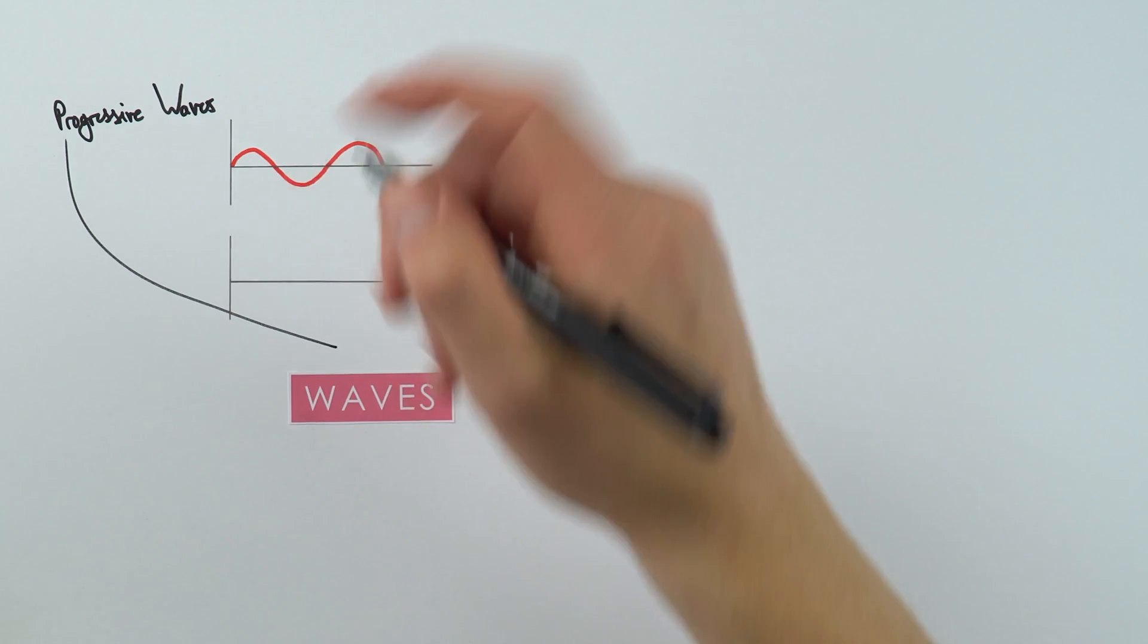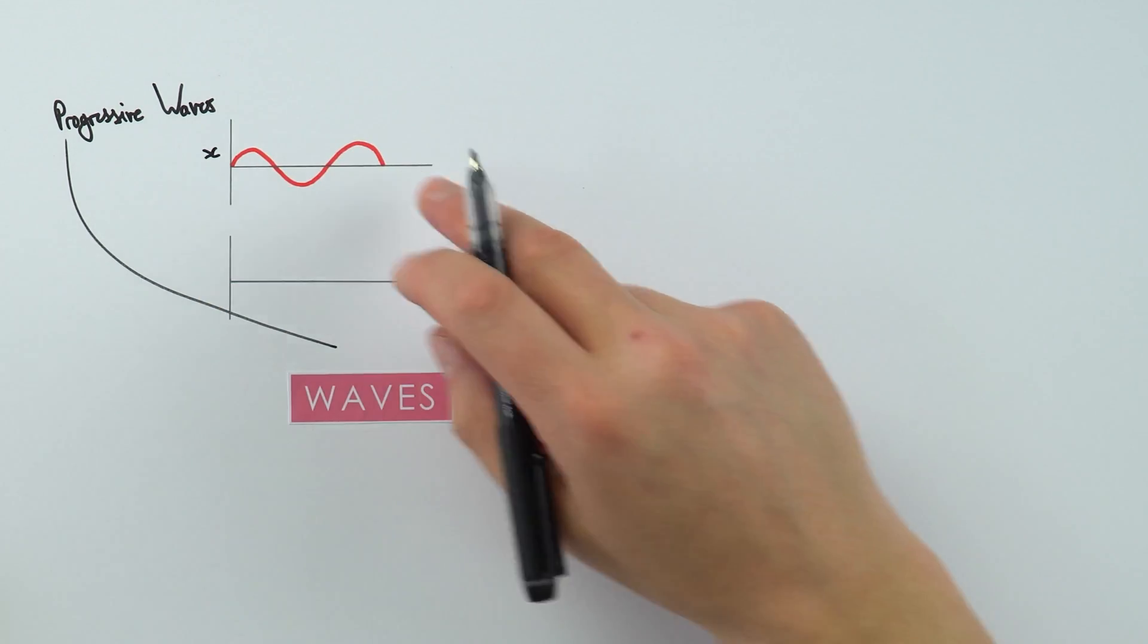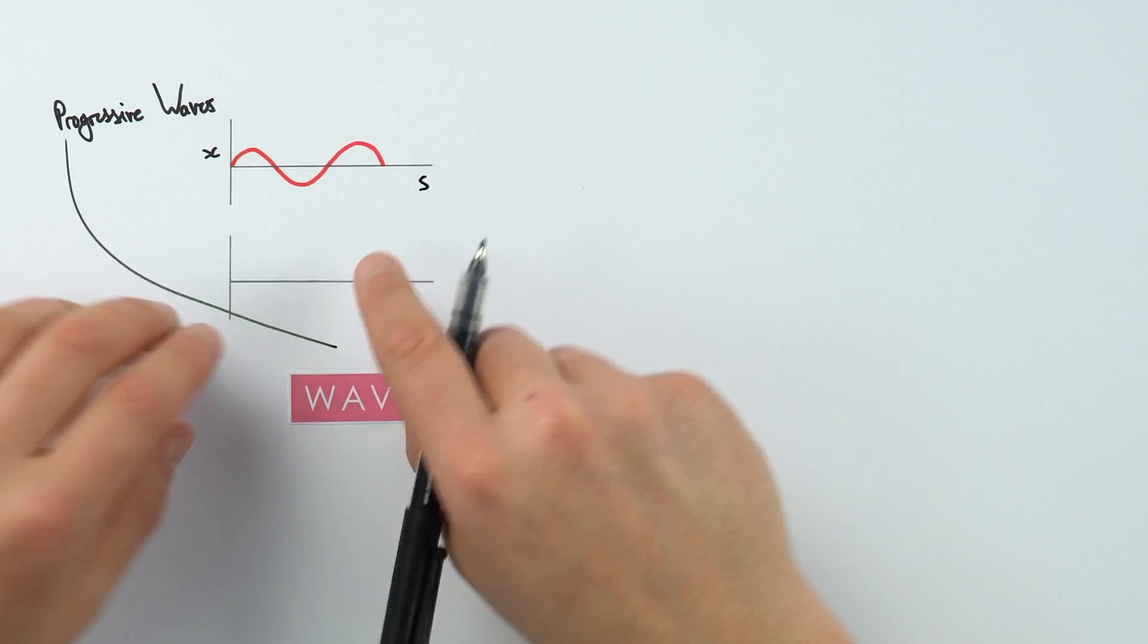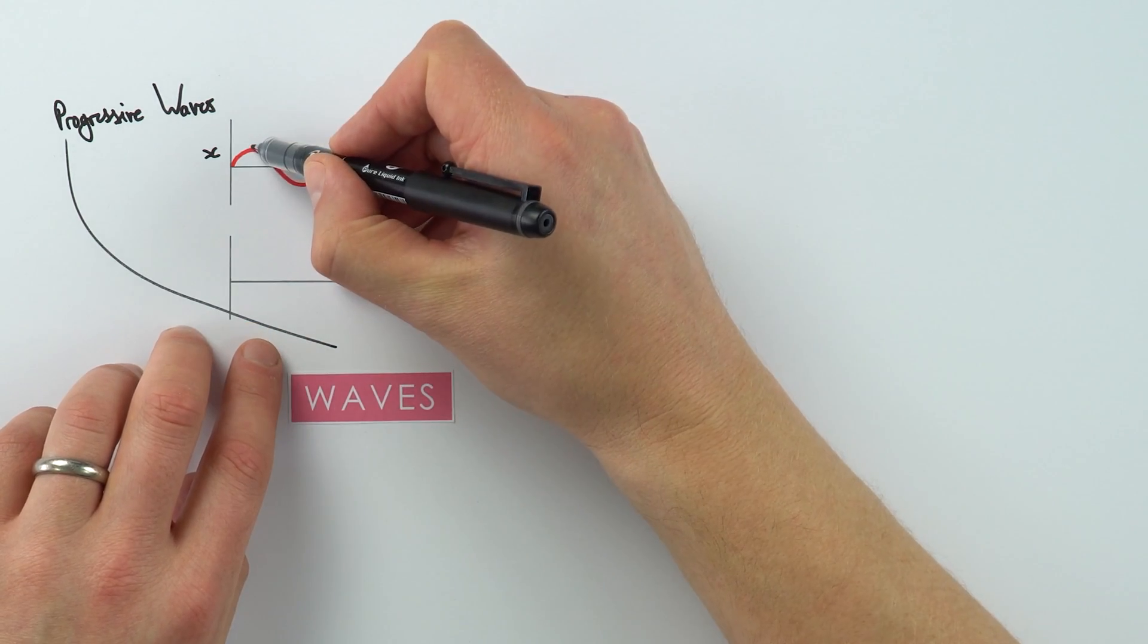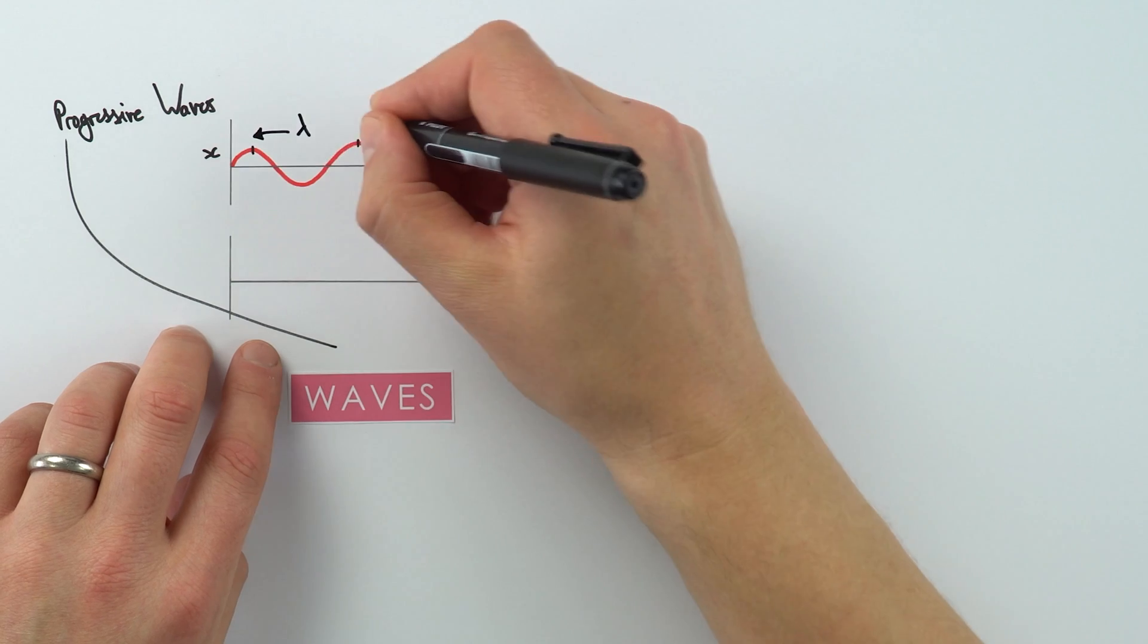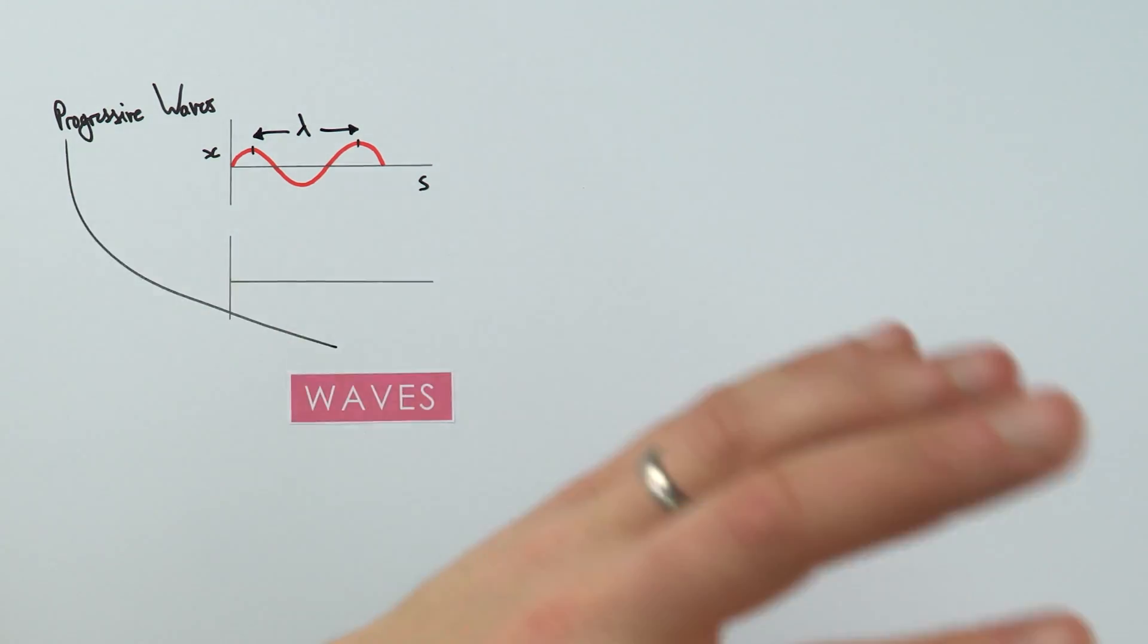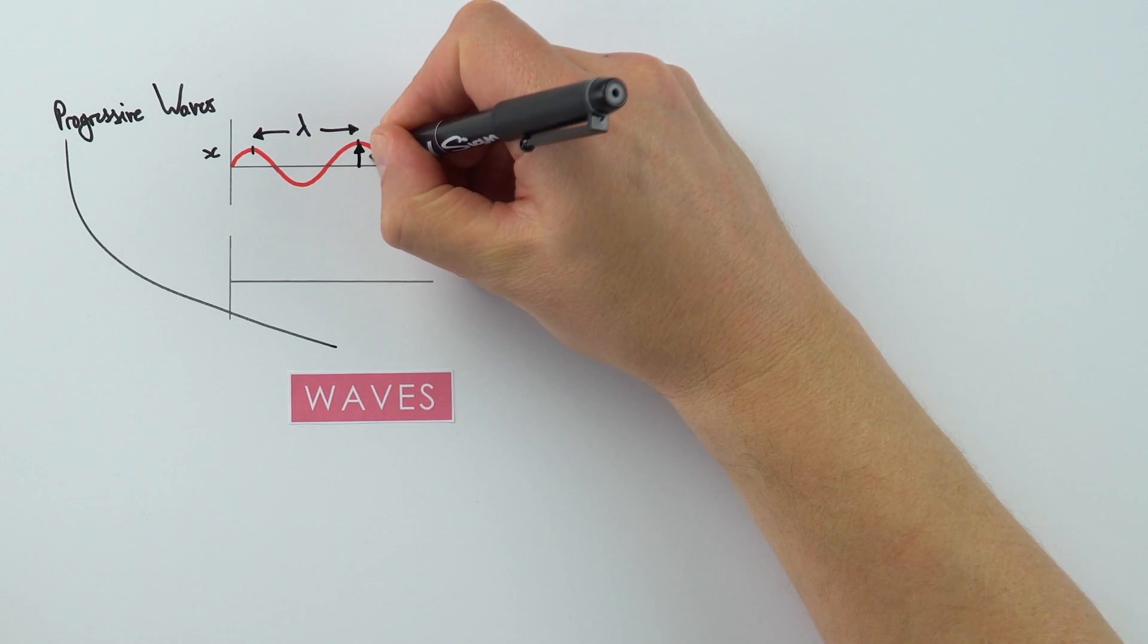This first one has displacement, which I'm going to call x, and this is how far the particles in that wave move from their rest position, and it can be both positive and negative. Along the bottom we're going to look at the distance along the wave, which I'm just going to call s. From one peak to another peak, this is the wavelength, and we use the letter lambda, the Greek letter lambda, to represent the wavelength. The amplitude of that wave is how far the particles move from the rest position, and that means the amplitude is this distance here, a.